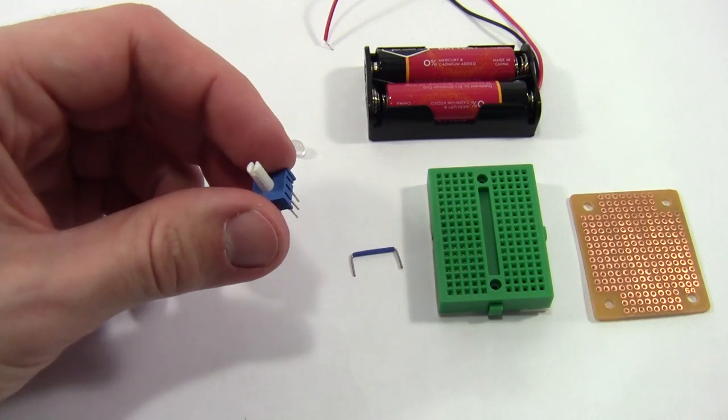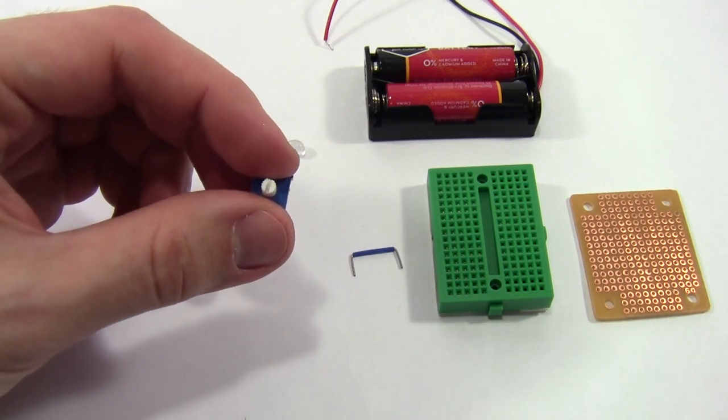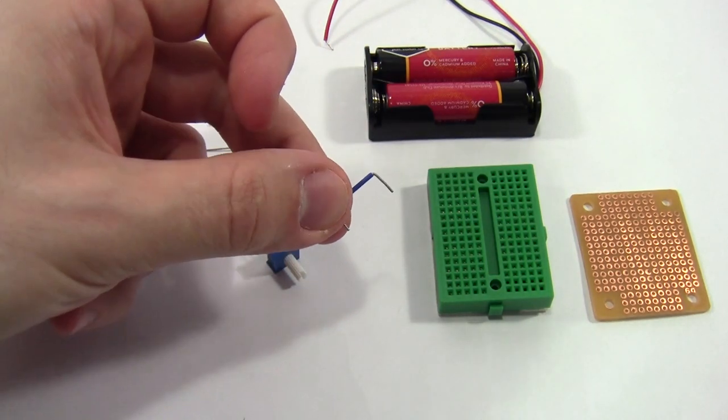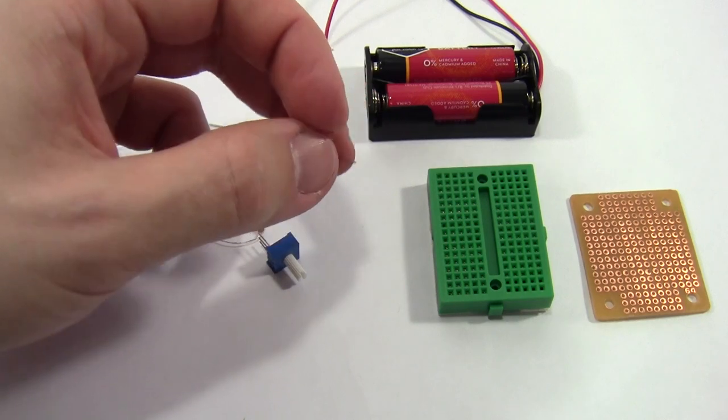We have a potentiometer, which is an adjustable resistor you can adjust by turning this white knob. A couple little jumper wires are always handy. You probably have little bits of these laying around everywhere if you do electronics projects as a hobby.